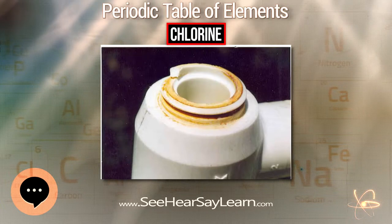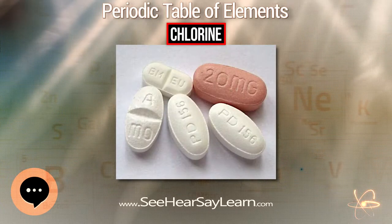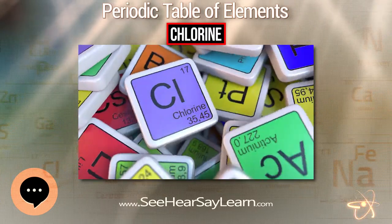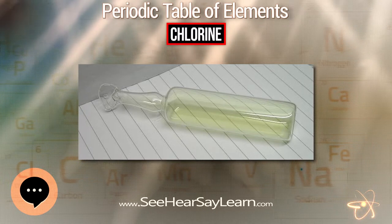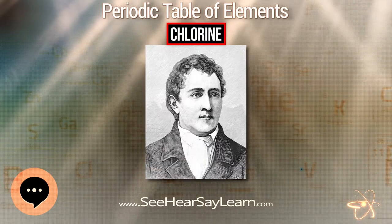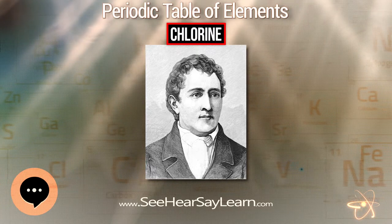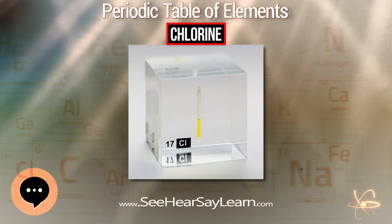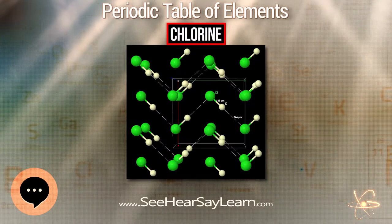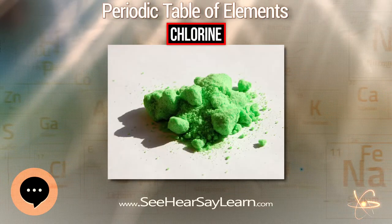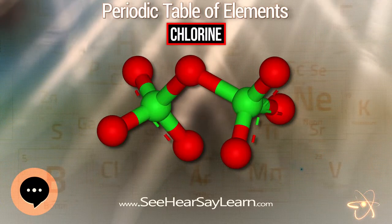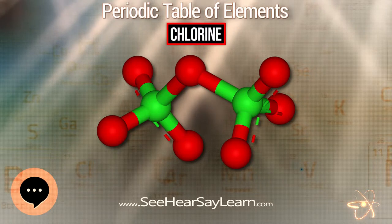Chlorine is the second halogen, being a non-metal in group 17 of the periodic table. Its properties are similar to fluorine, bromine, and iodine, and largely intermediate between those of the first two. Chlorine has the electron configuration 3s²3p⁵, with seven electrons in the third and outermost shell acting as its valence electrons. Like all halogens, it is one electron short of a full octet and is hence a strong oxidizing agent, reacting with many elements to complete its outer shell.